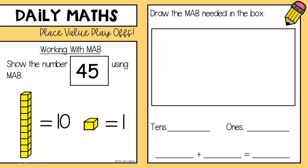Now I would like you to make the number 45. We don't have bundling sticks anymore — now we're using our tens and ones, or Dienes blocks. I would like you to use these: a group of 10 and the ones to make 45. Please draw the picture, write how many groups of 10 there are, how many ones, and then write a number sentence. Pause the video here and do that, and I'll move on to the next slide.